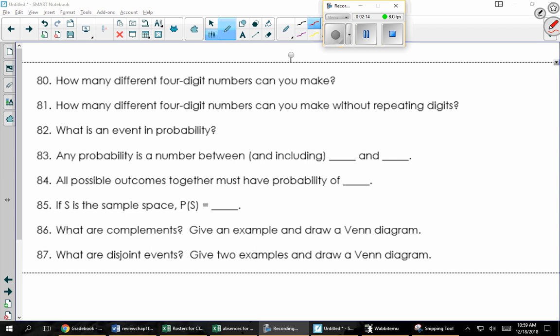So this kind of leads into how many different four-digit numbers can you make? Well, we've got four-digit numbers. There are ten digits if we allow it to start with a zero. So there's ten different possibilities here, ten different here, ten different here, ten different here. That's 10,000 different numbers.